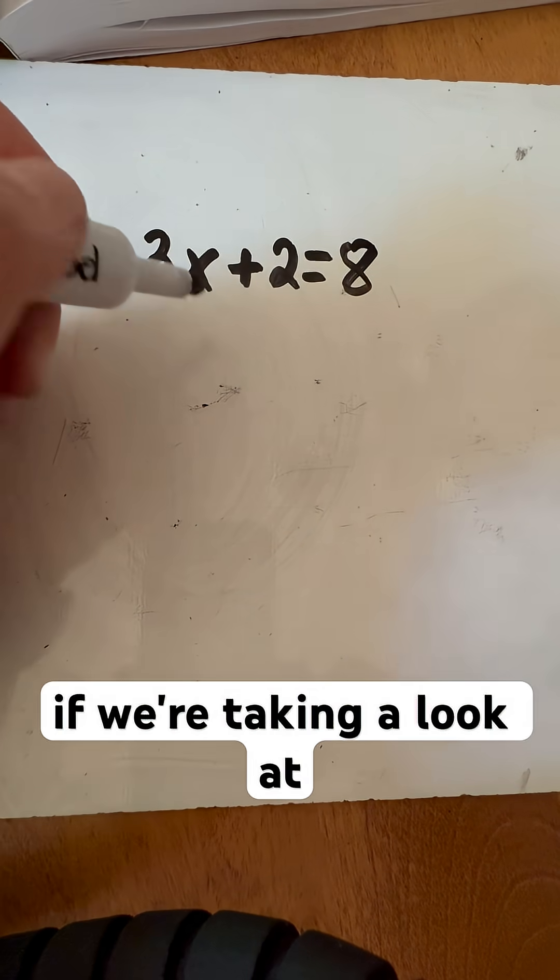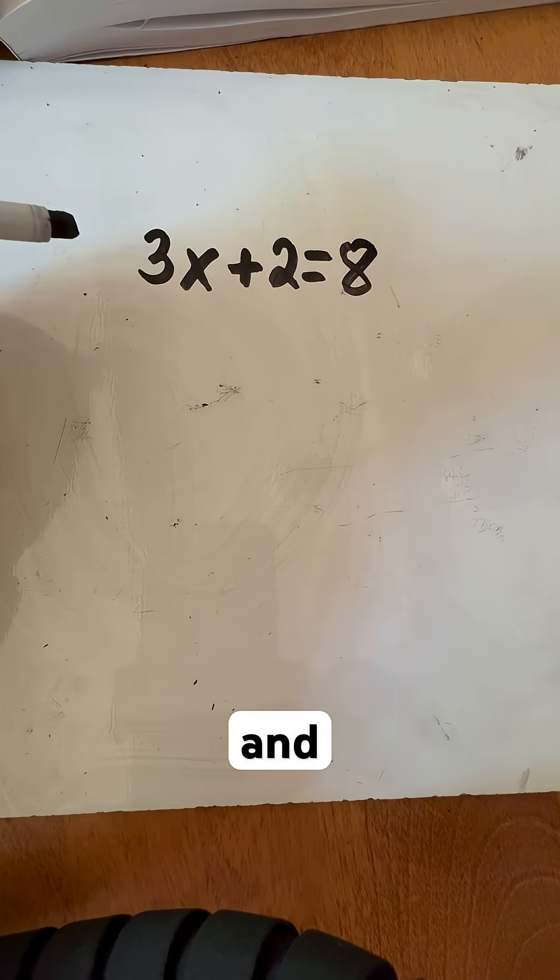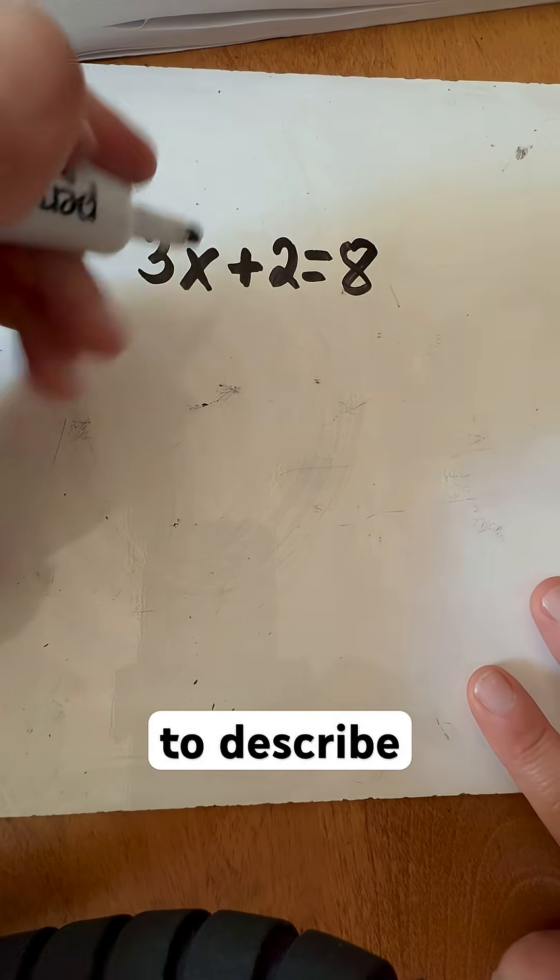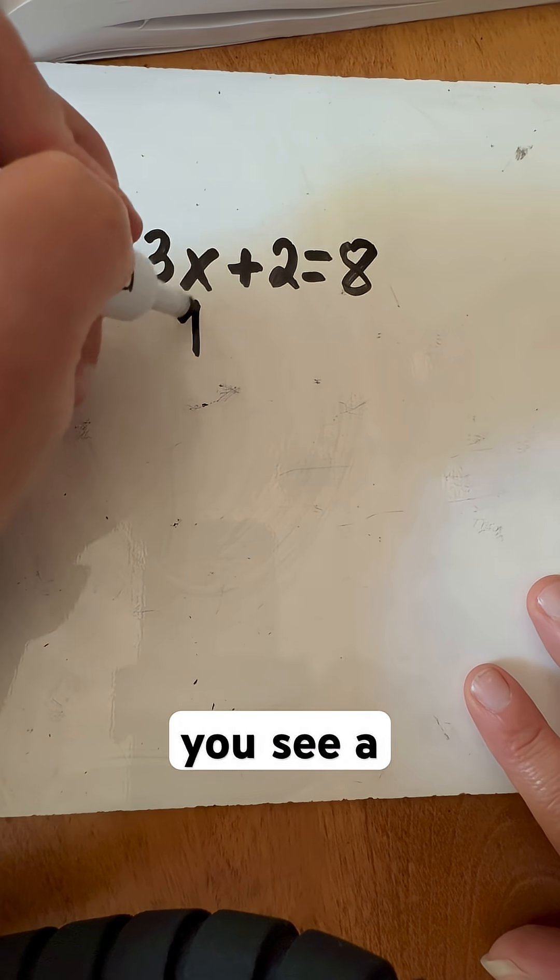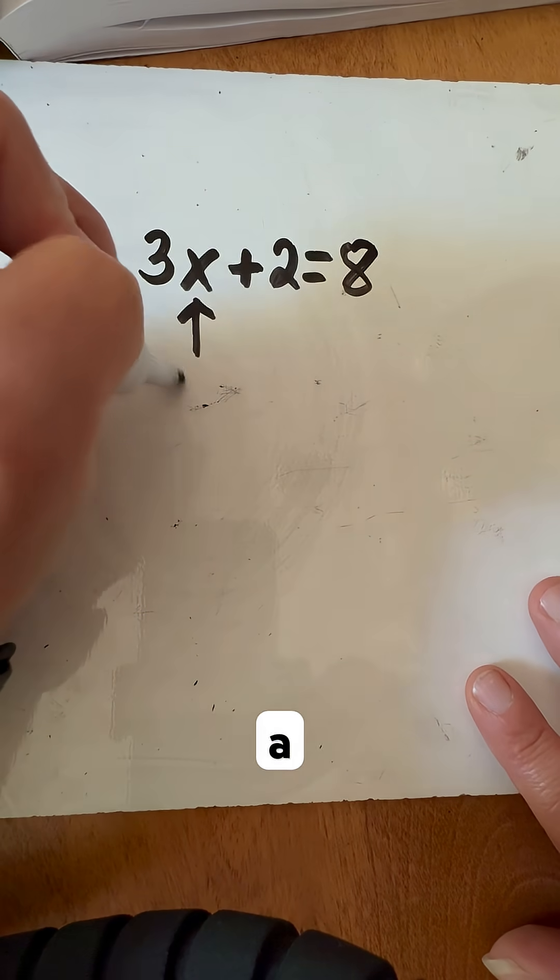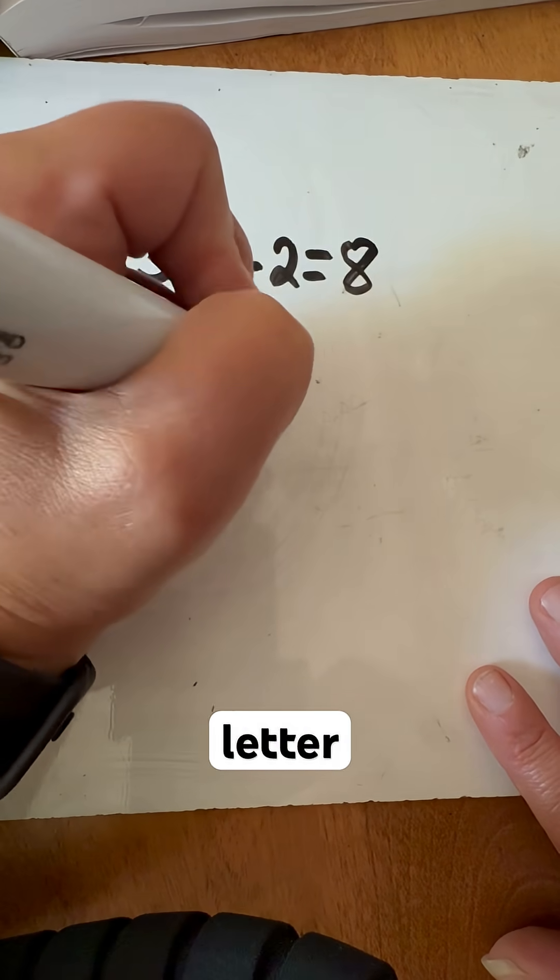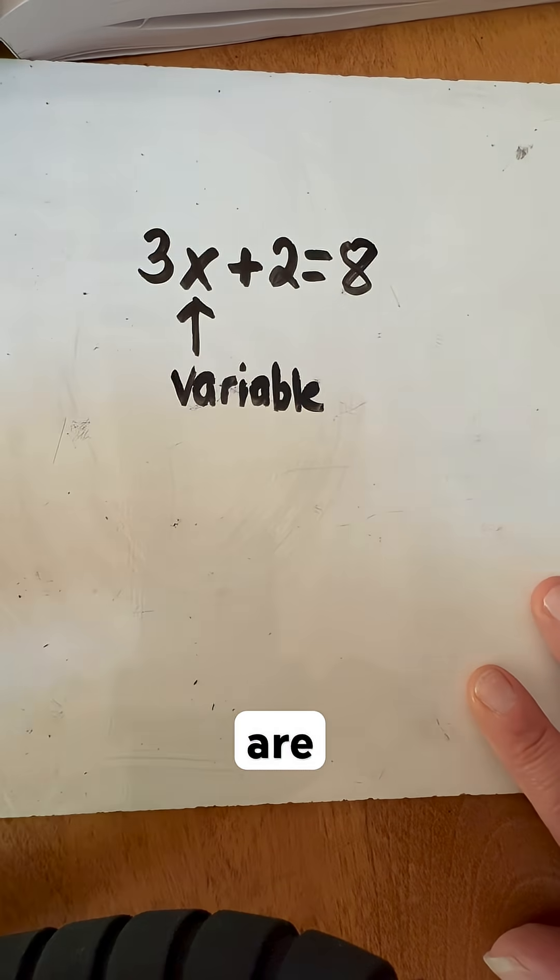So if we're taking a look at what is called a variable, a variable is something that we don't know what it is, and so we've used letters to describe those. So anytime you see a letter in a situation, this is considered a variable. So anytime you see any letter at all, these are variables.